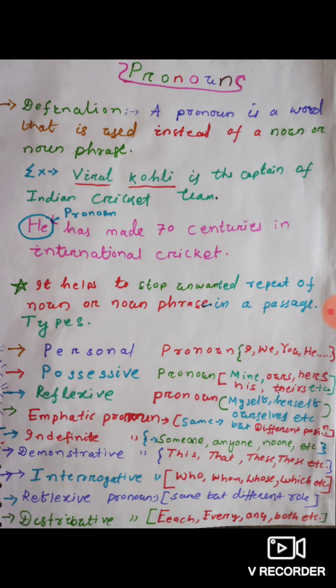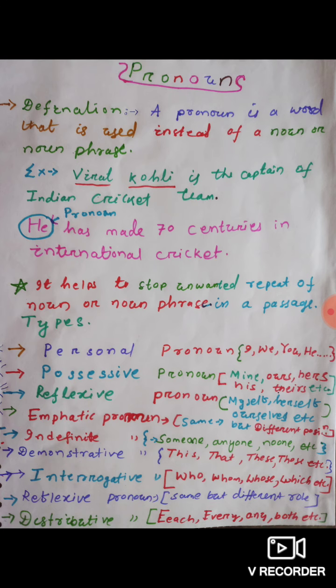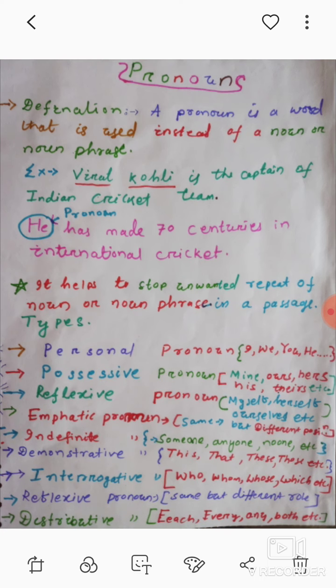Here on the right side we have the types of pronouns with their examples. I, we, you, he are examples of personal pronouns. Mine, ours, hers, his, theirs are the possessive pronouns. And myself, ourselves are the reflexive and emphatic pronouns. Someone, anyone, none, etc. are examples of indefinite pronouns.